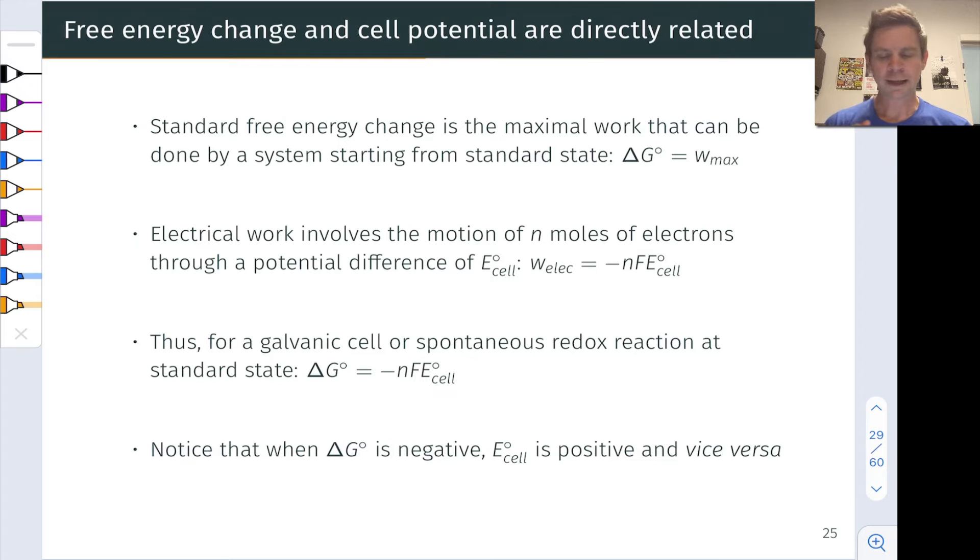So to begin with this, let's remind ourselves what the change in free energy under standard conditions, the standard free energy change, is for a process. It's the maximum amount of work that can be done by a system starting from the standard state and proceeding to equilibrium. And here we're assuming the system proceeds spontaneously from reactants to products in a chemical reaction. And so ΔG°, the standard free energy change, is equal to W_max, the maximum amount of work that that chemical system can do.